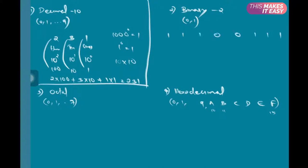For example, I have a binary number 11100111. As we did in decimal, from the extreme right I'm starting putting 2 as the base: 2 raised to 0, 1, 2, 3, 4, 5, 6, 7. What is the value? 2 raised to 0 is 1, then 2, 4, 8, 16, 32, 64, 128.